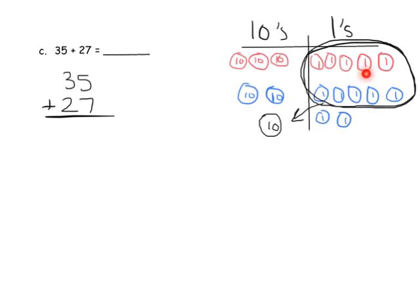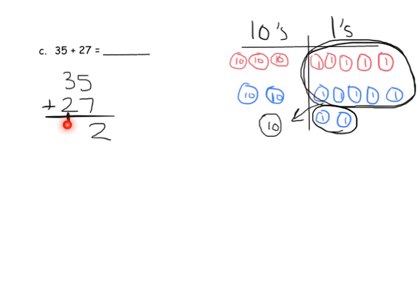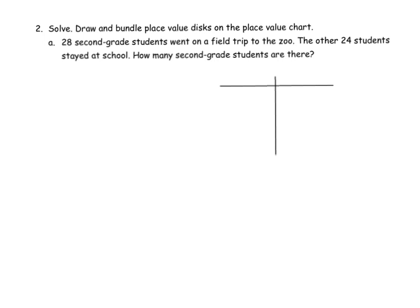Now we record this in the standard algorithm. Five plus seven is twelve: we write the two leftovers in the ones place and record the bundled ten as a small '1' carried into the tens column. That carried 1 represents the ten ones that were bundled. Now we have three tens plus two tens plus one new ten — three plus two plus one equals six — so our answer is 62.